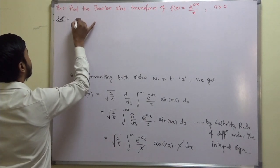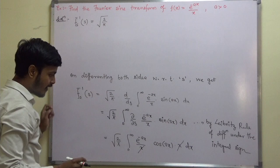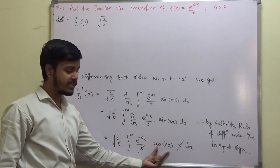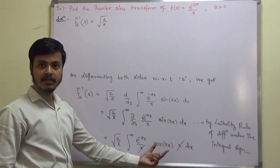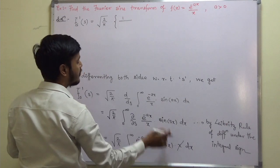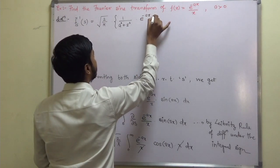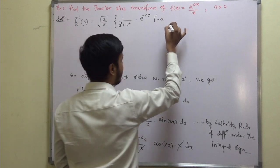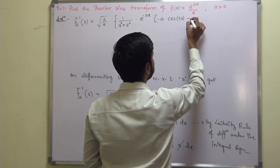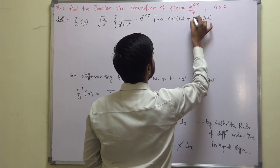So f_s bar dash of s equals sqrt(2/pi) times the integration of e^(-ax) times cos(sx). We have already seen this integration in previous examples. It equals 1/(a² + s²) times e^(-ax) in bracket: minus a·cos(sx) plus s·sin(sx), evaluated from 0 to infinity.